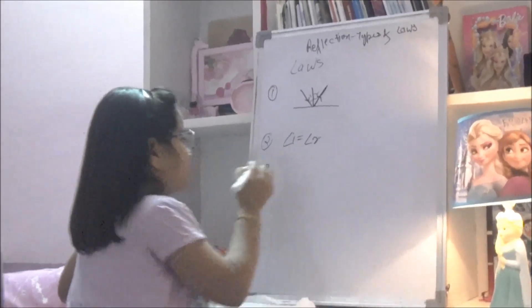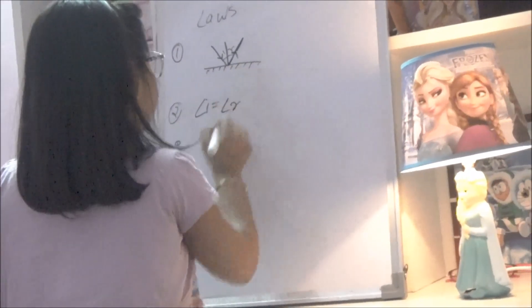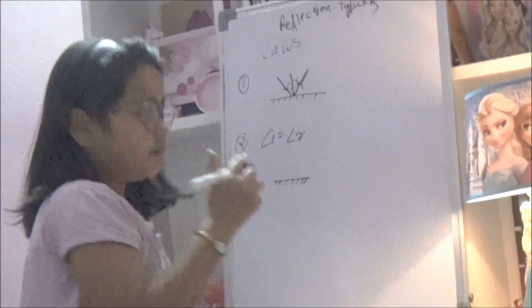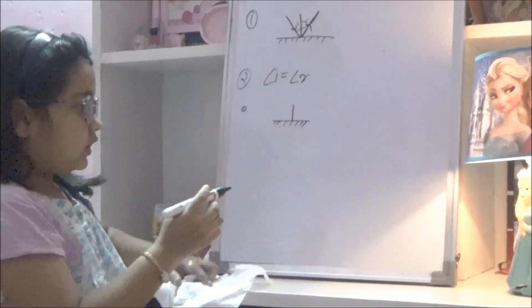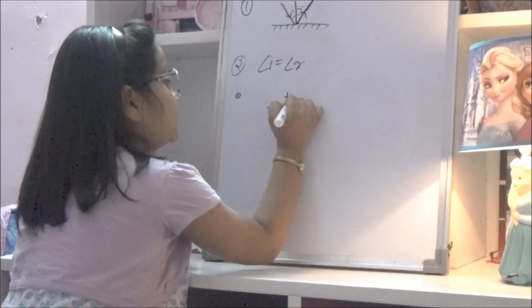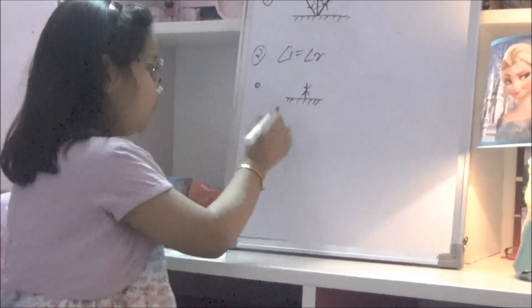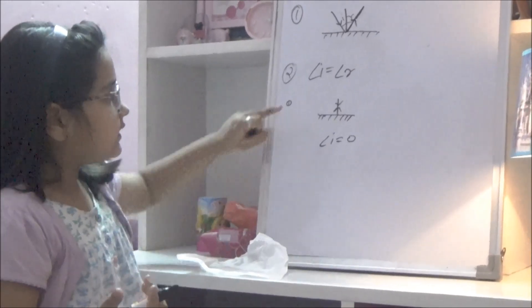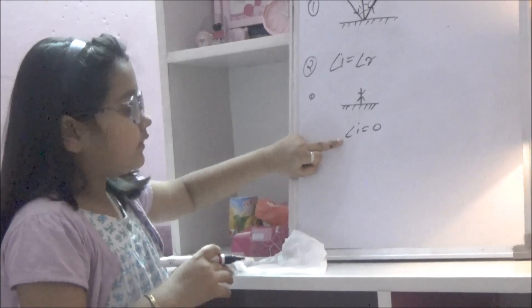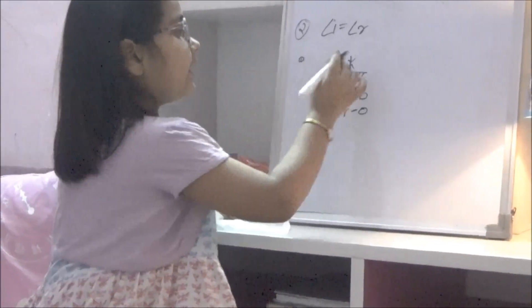Now two very important cases to note. First, if on a mirror surface the light ray is incident normally, then it retraces its path. This is because if light is incident normally, the angle of incidence equals 0, since the incident ray and the normal are the same. So as per the law, the angle of reflection also equals 0, and the light retraces its path.